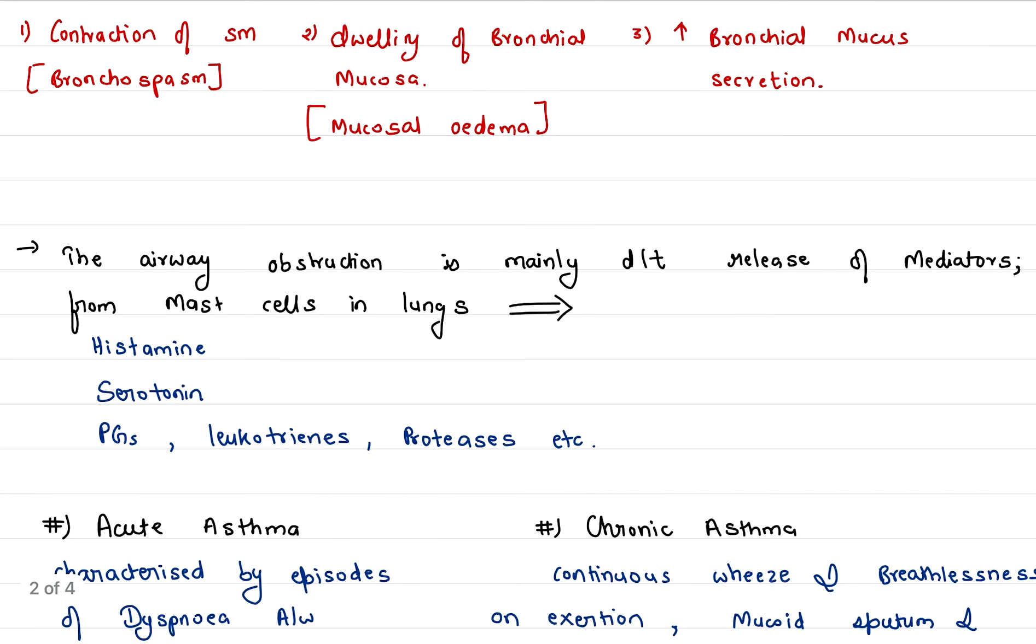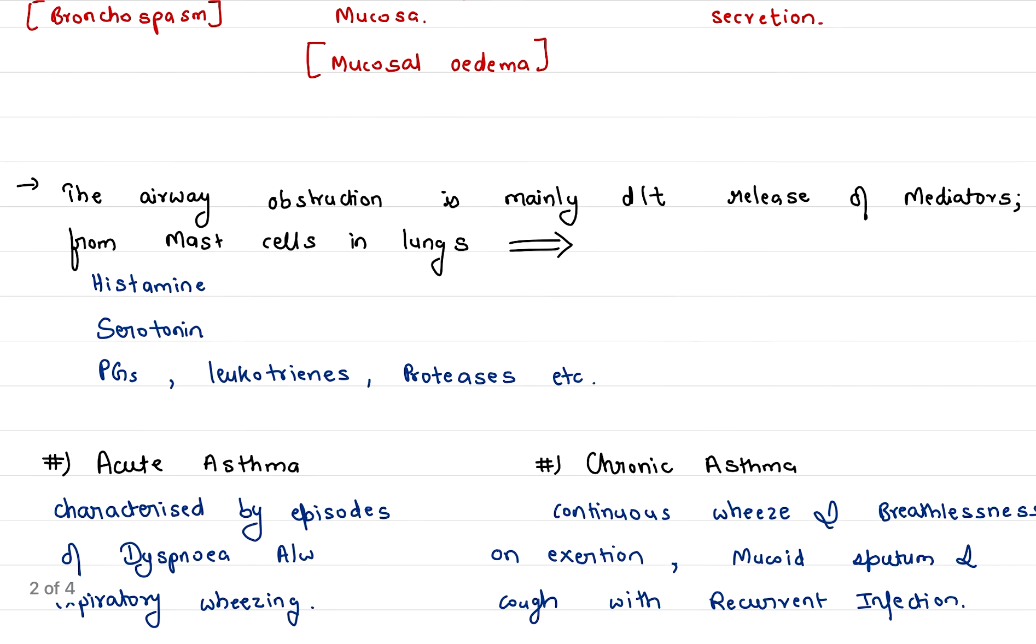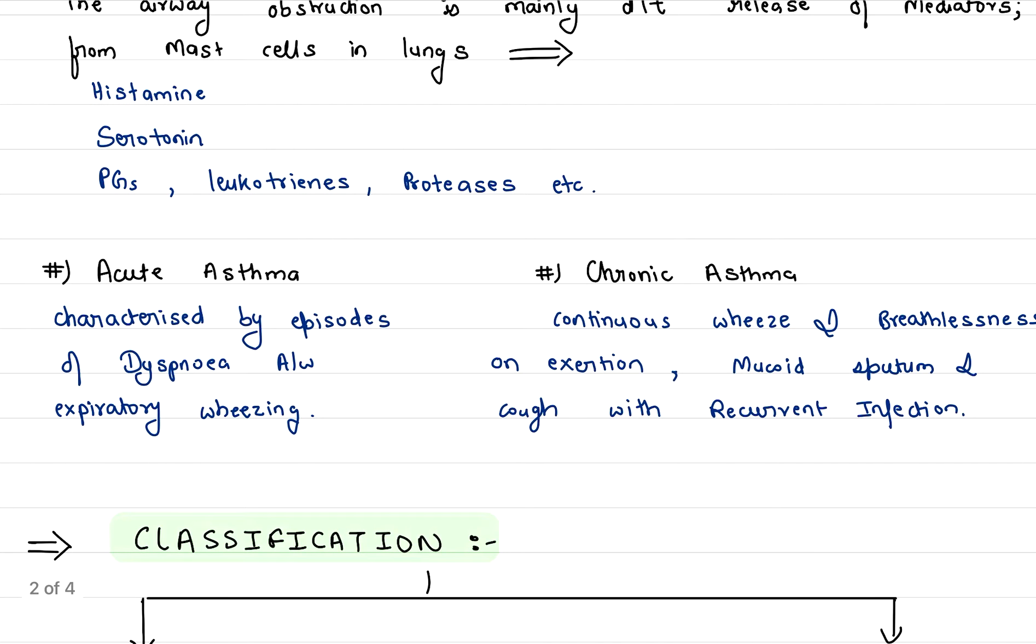The airway obstruction is mainly due to release of mediators from mast cells in the lungs. These mediators can be histamine, serotonin, prostaglandins, leukotrienes, proteases, etc.